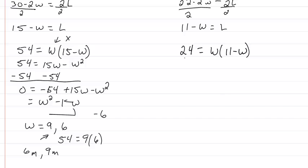So what that means is that we have 24 equals W times 11 minus W. So now we solve. We get 24 equal to 11W minus W squared. Move our 24 over.